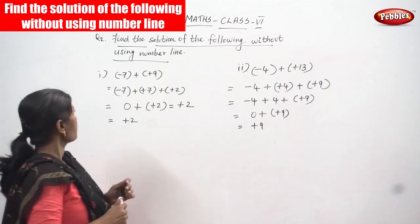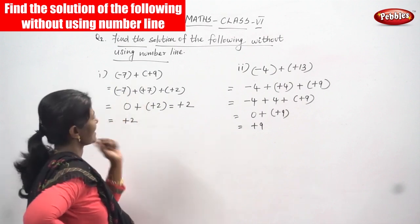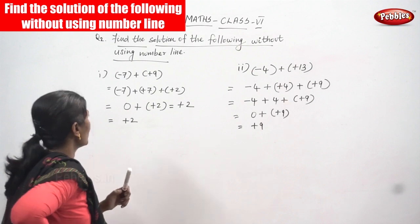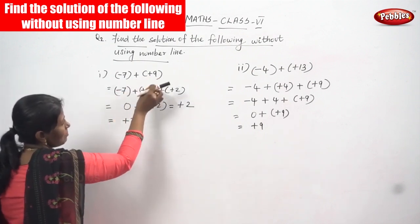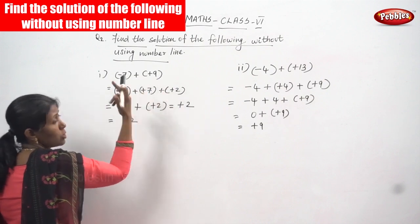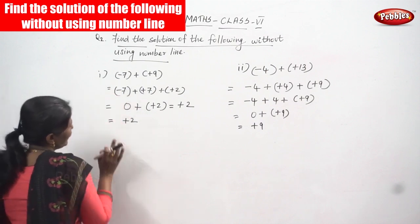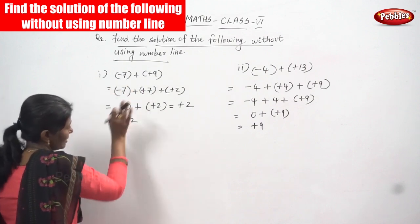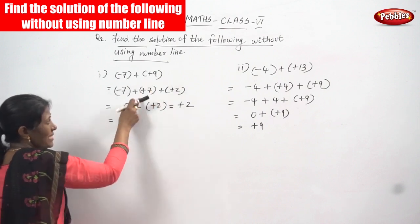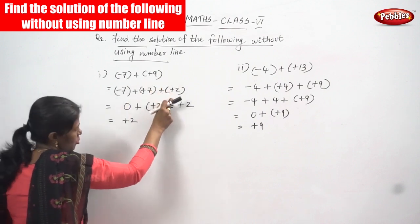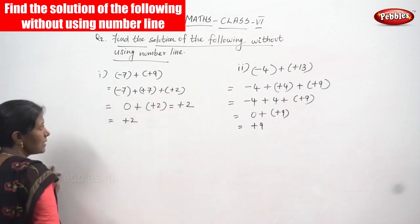Okay, minus seven plus plus nine. So what we are going to do with minus seven plus plus nine is: we take the biggest number — comparing these two numbers, plus nine is the bigger number. So minus seven you write as it is, then plus nine you also write. Then you split plus nine into plus seven and plus two. Write everything in the bracket.